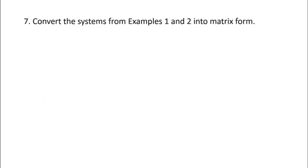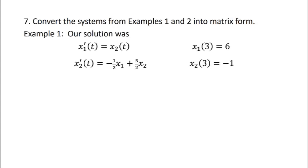Okay, now we're going to go back to the systems we had in examples one and two in the last video and convert those systems into matrix form. So in example one, our final solution was the system x1 prime equals x2, x2 prime equals minus a half x1 plus five halves x2. And we also had the initial values x1 of 3 equals 6, x2 of 3 equals negative 1.